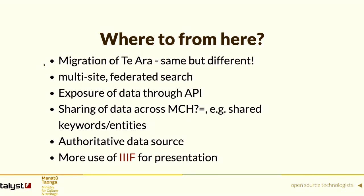We have another site in the pipeline for migration: Te Ara, the Encyclopedia of New Zealand. Initially conceived as an online encyclopedia, it has 980 stories, approximately 5,700 pages, and 28,000 in-house resources — images, sound, video, and interactives. There are also add-ons like the Dictionary of New Zealand Biographies, with approximately 3,100 live biographies and over 4,000 associated images and media.